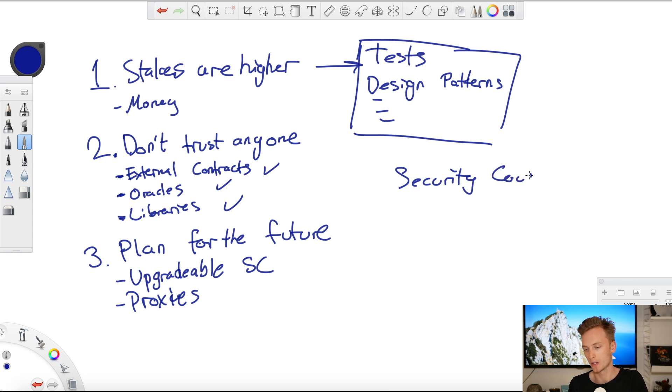We go through all of this: how to build upgradable contracts, how to use proxies, and how to actually think and get into the mindset of having to plan for the future. Having to think about what will happen if, for example, one of my oracles or one of my external contracts becomes hacked or becomes malicious. How can I act so that my contract is still safe? How can I upgrade that and prevent hackers from actually going in and messing with my contract?